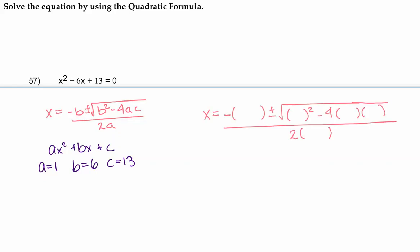So we're going to write x equals negative b plus or minus the square root of b squared minus 4ac all over 2a. And now that we've made sure that we put in the correct values, we're going to simplify this. So we have x equals negative 6 plus or minus the square root of 6 squared minus 4 times 1 times 13 over 2 times 1.